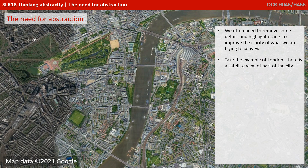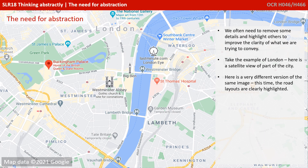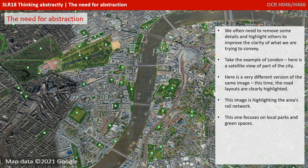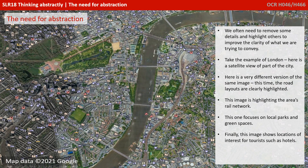Here's a satellite view of part of the city. Here's a very different version of the same image — this time the road layouts are clearly highlighted. This image is highlighting the area's rail network, whereas this one is focusing on local parks and green spaces. Finally, this image shows locations of interest for tourists such as hotels and restaurants.